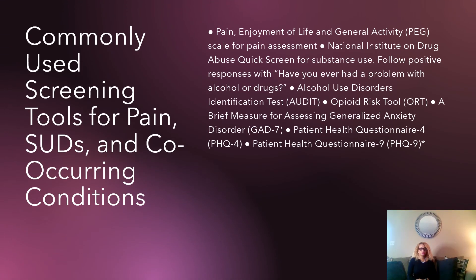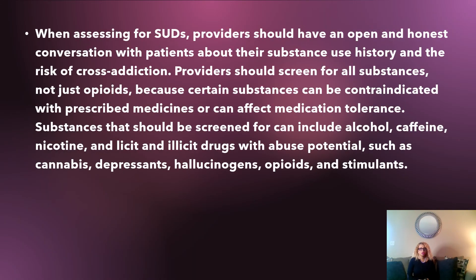Here are some commonly used screening tools for pain, SUDs, and co-occurring disorders. When assessing for SUDs, providers should have an open and honest conversation with patients about their substance use history and risk of cross-addiction. Providers should screen for all substances, not just opiates, because certain substances can interact with prescribed medications or can affect medication tolerance. Substances that should be screened for include alcohol, caffeine, nicotine, and illicit drugs with abuse potential such as cannabis, depressants, hallucinogens, opiates, and stimulants.